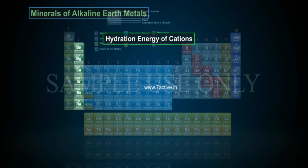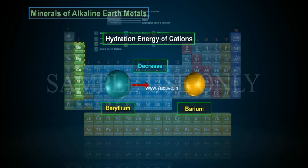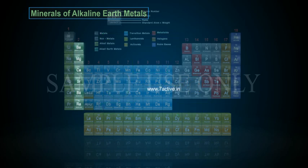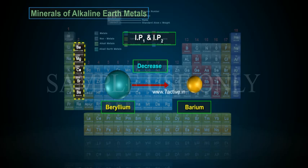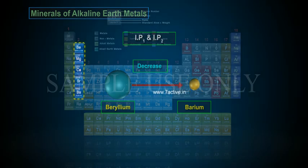Hydration energy of cations decreases from beryllium to barium. First ionization potential (IP1) and second ionization potential (IP2) both decrease from beryllium to barium.